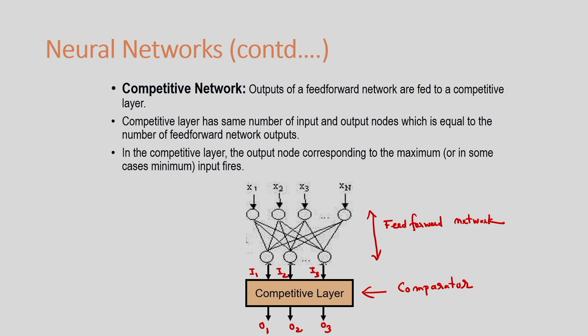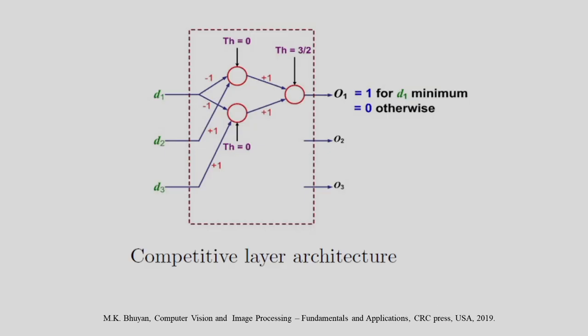At a particular instant, suppose I2 is maximum. There is a comparison between I1, I2, and I3 — whichever is maximum at a particular time fires. If I2 is maximum, the output will be O2. So the objective of the competitive layer is to determine which input is maximum and fire the corresponding output.